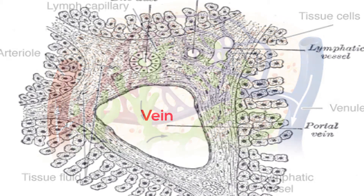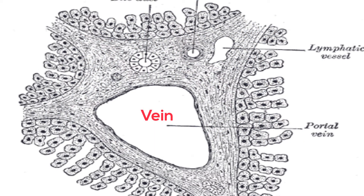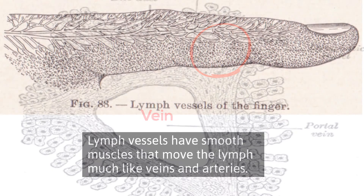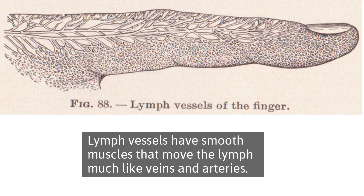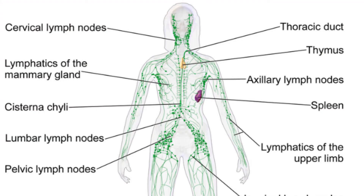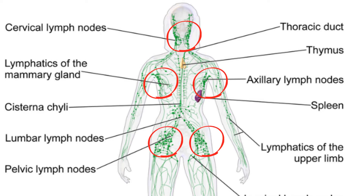If you look at this cross-section of a tissue, you'll notice how the lymphatic vessel is located near the vein. Once this blood that has leaked out of capillaries enters a lymphatic vessel, it is called lymph. The lymphatic vessels have smooth muscles and valves that help the lymph move throughout your body. Once lymph enters the vessels, it is then transported to lymph nodes that act as filtering stations in your body.